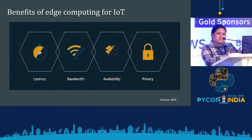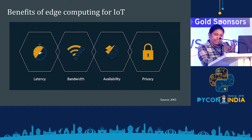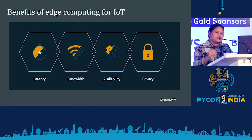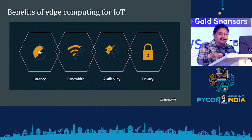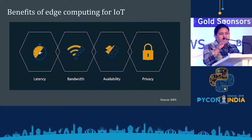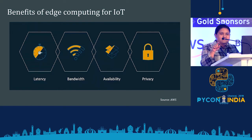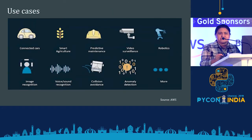If processing is done on the device, we can do it without internet connectivity. For availability, we don't need to be bothered about continuous availability because it's done on or close to the device. For privacy, in edge computing you process most of the information and then send only the essential information to the cloud and reject the rest — so privacy is maintained that way.